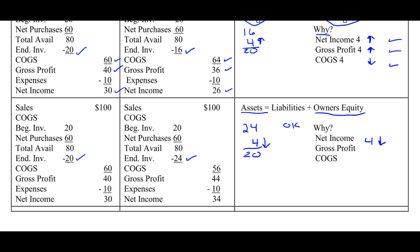Cost of goods sold and ending inventory directly affect net income, which directly affects owner's equity. So net income must have been $4 too high and gross profit must have been $4 too high to cause this error. And this would have all been caused by cost of goods sold being too high. So without looking at the income statements at all, I've determined what errors I'm looking for.